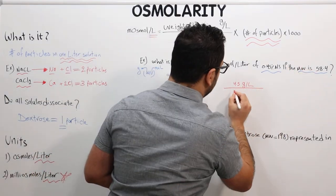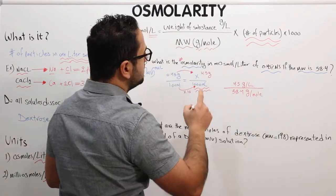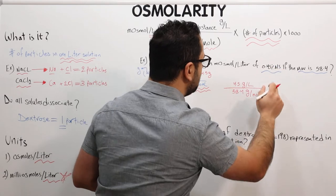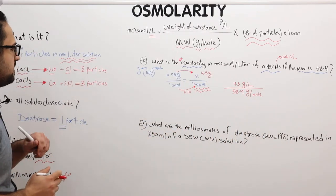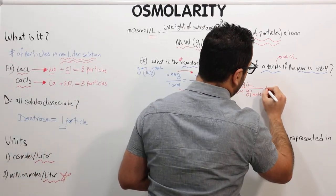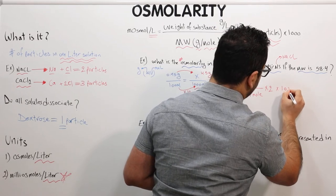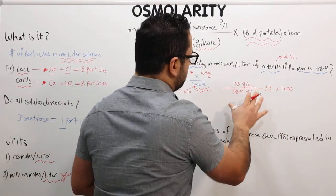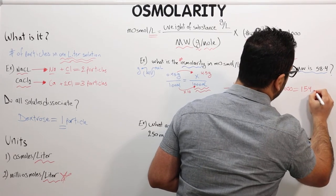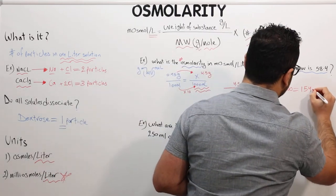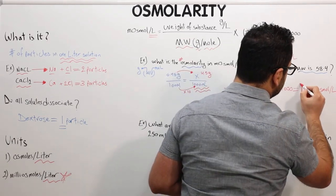Now plugging into the equation: weight of substance is 4.5 grams per liter; molecular weight is 58.4 grams per mole. Normal saline is NaCl, which has 2 particles. Multiplying by 1000 and calculating everything, you should end up with an answer of 154 milliosmoles per liter. This is the answer to question one.